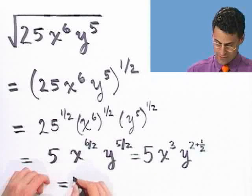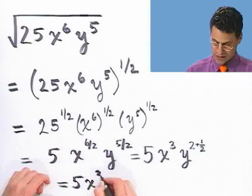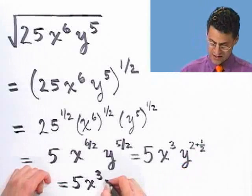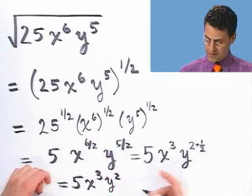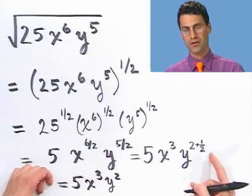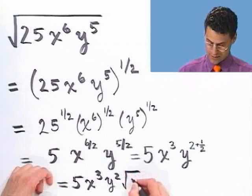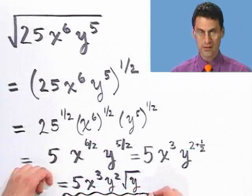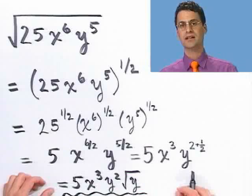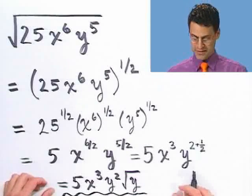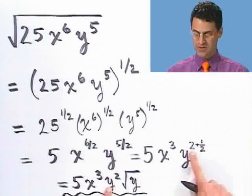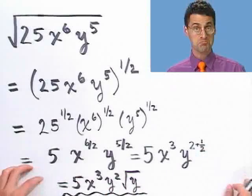That gives 5x³ times y squared times y to the one-half, which is the square root of y. It looks different, but it's the same thing — we're combining y squared and y to the one-half by adding exponents.